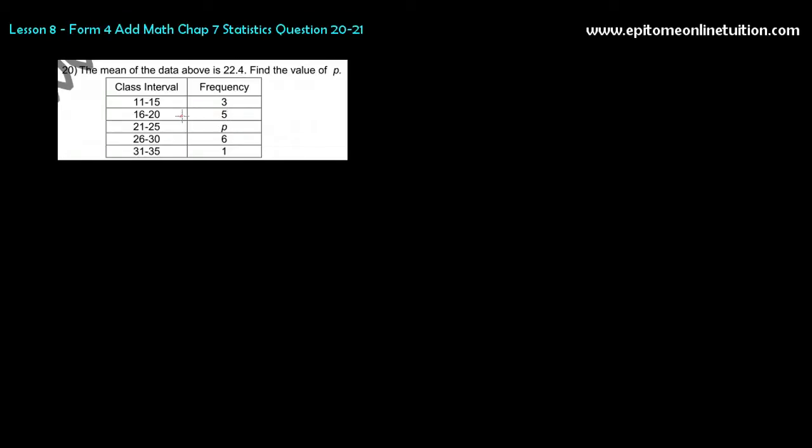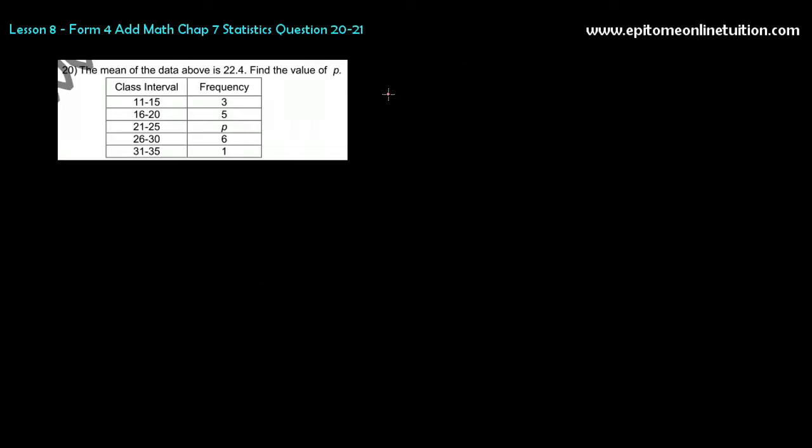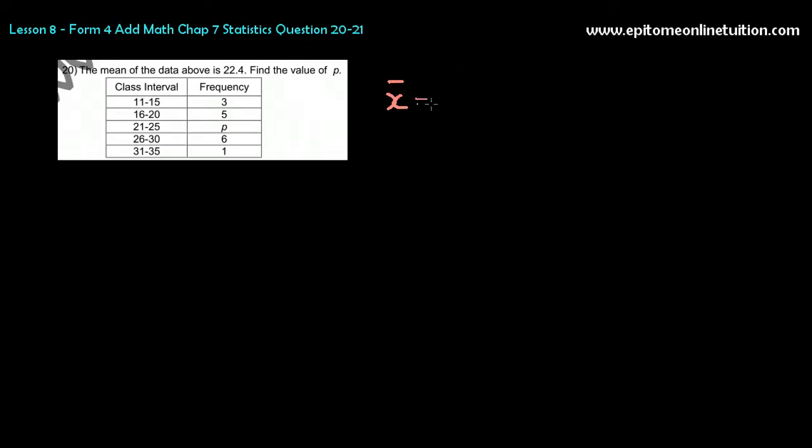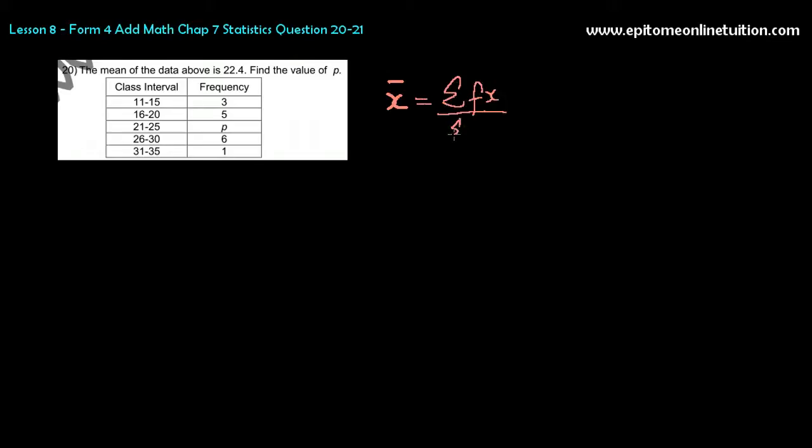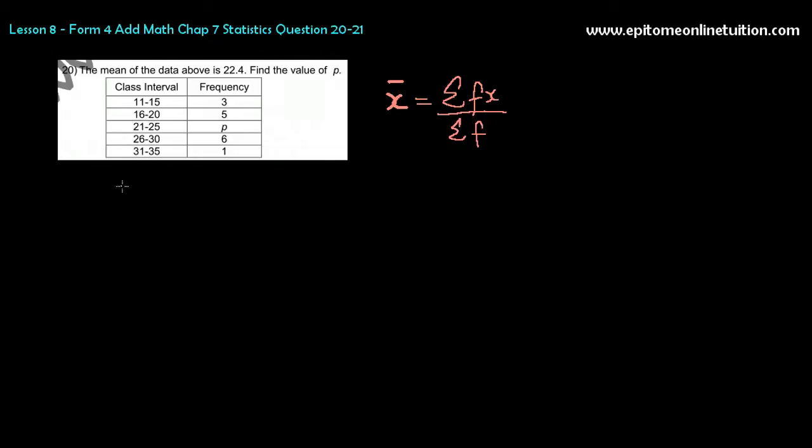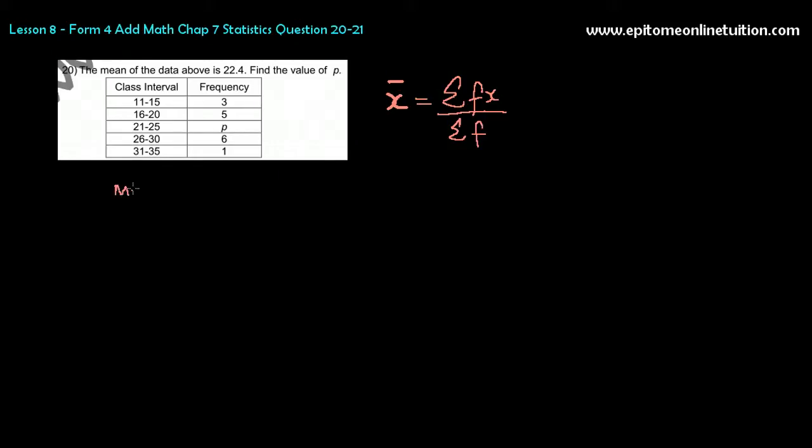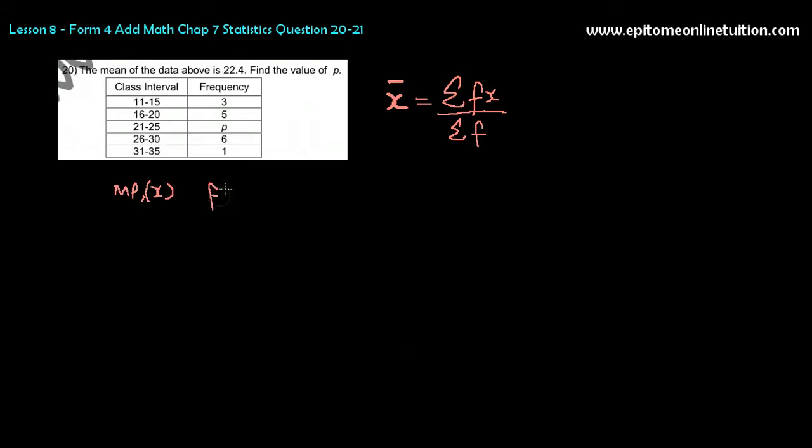The method to do is always the same. To find the mean, first you need to have the formula. The formula says that mean is equal to the sum of fx over the sum of f. So let's put out a table here for fx. x in this case is the midpoint.